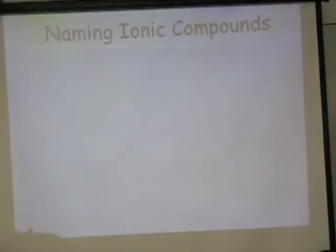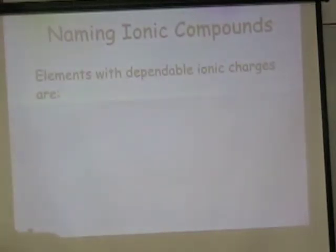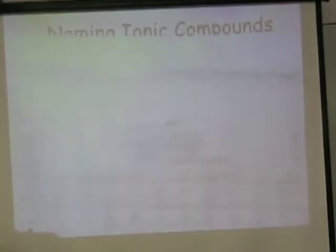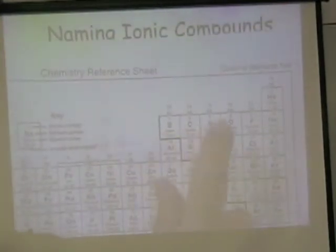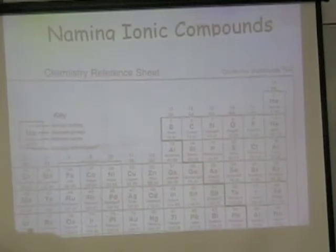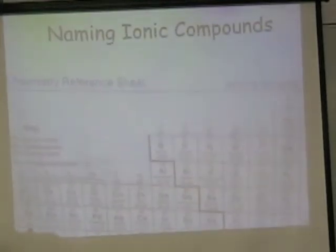To begin with, we need to know which elements have predictable ionic charges. Elements with dependable ionic charges are going to be the elements in the representative groups of the periodic table — groups one, two, and not the transition metals, as we've already seen — groups three, four, five, six, seven, eight. So go ahead and get your periodic table out for this, because you are going to actually write on it. Take it out of its page protector so that you are ready to write some numbers down on it.